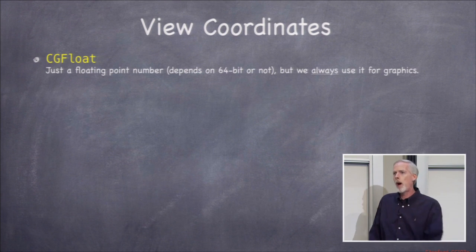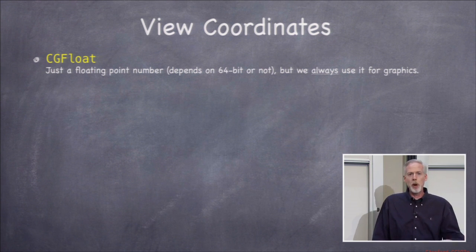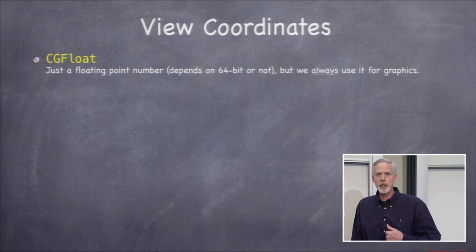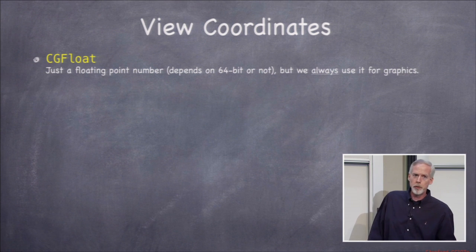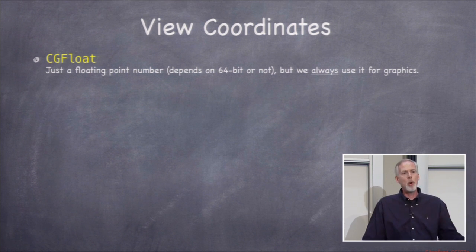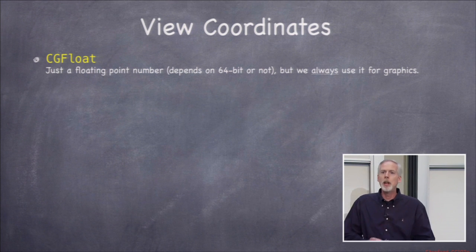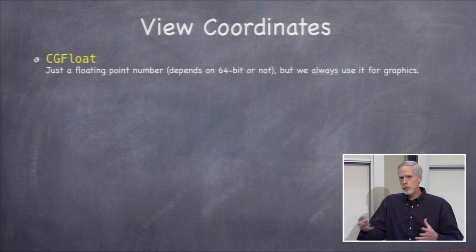Before talking more about UIView drawing and events, we need to define a few types. CGFloat is a floating point number — all floating point numbers that have to do with drawing on the screen or getting touch events are CGFloats. It might be 32 or 64 bits; you don't know and you don't care, but you always use CGFloat. When multiplying or adding numbers related to on-screen positions, keep everything in the CGFloat domain.